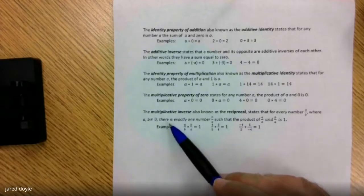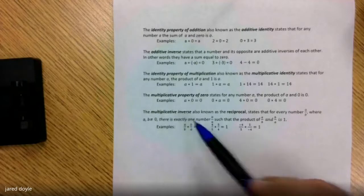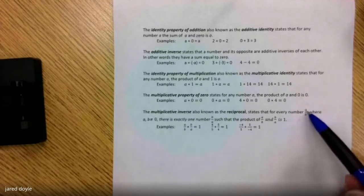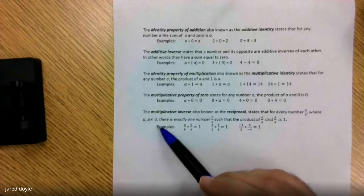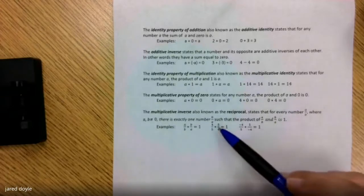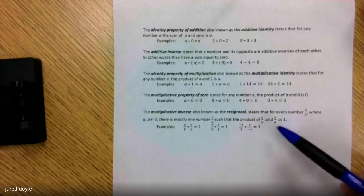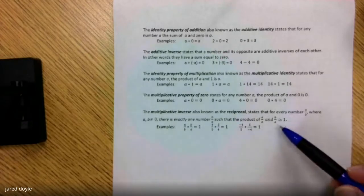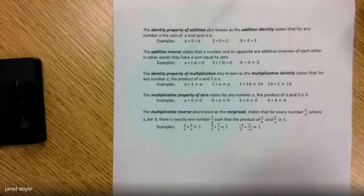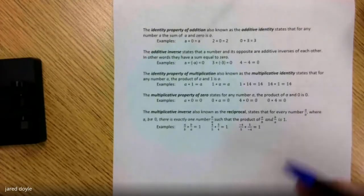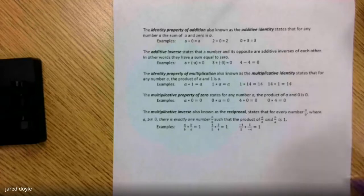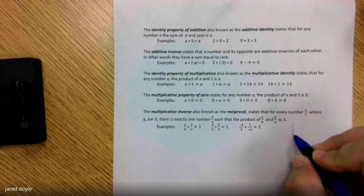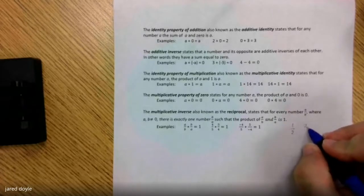Then we have the multiplicative inverse, also known as the reciprocal, which states that for every number a divided by b, where a and b are not equal to zero, there's exactly one number b divided by a such that the product of (a over b) times (b over a) is equal to one.